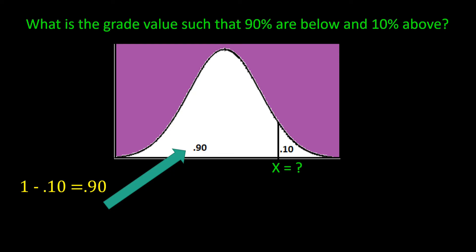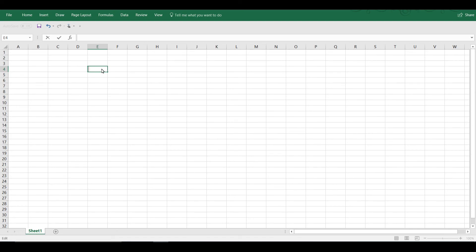Let's see how this is done in Excel. We would type in equal to NORM.INV, open parenthesis, and then you can see there it says probability, mean, standard deviation.